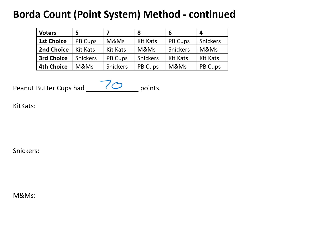I like to set myself up by writing out four points, three points, two points, and one point for each position first. Then I can concentrate on where the votes are. For Kit Kats in first choice, there are eight votes. In second choice, Kit Kats appear twice giving 12 votes.